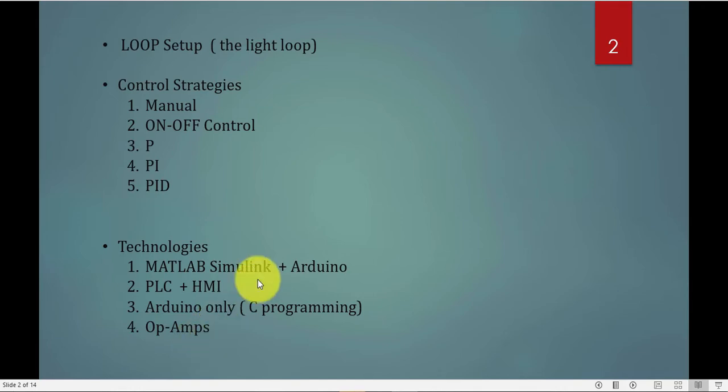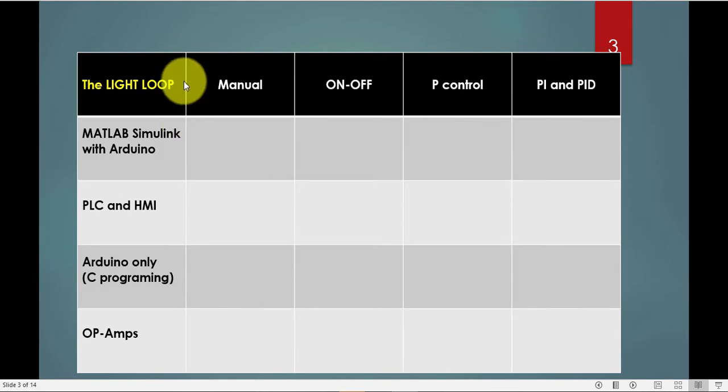In this multi-part video series, we will learn the light loop, where I will control the intensity of an LED using MATLAB Simulink with Arduino in manual, on-off, P control, PI, and PID modes. We'll also use the PLC and HMI as the controller in manual mode, on-off control, P control, PI, PID, and using Arduino only as the controller with manual strategy, on-off control, P control, PI and PID.